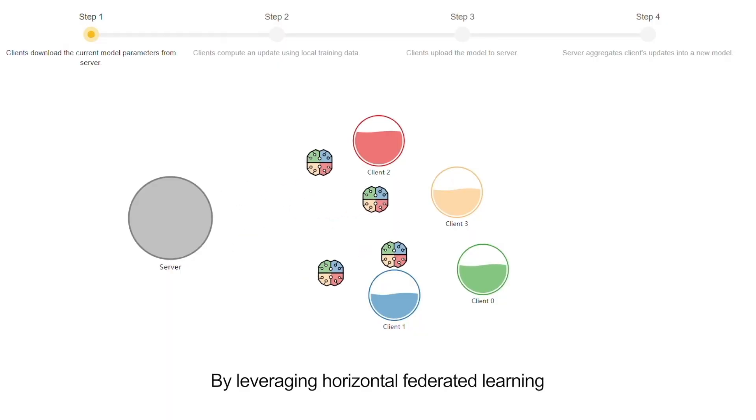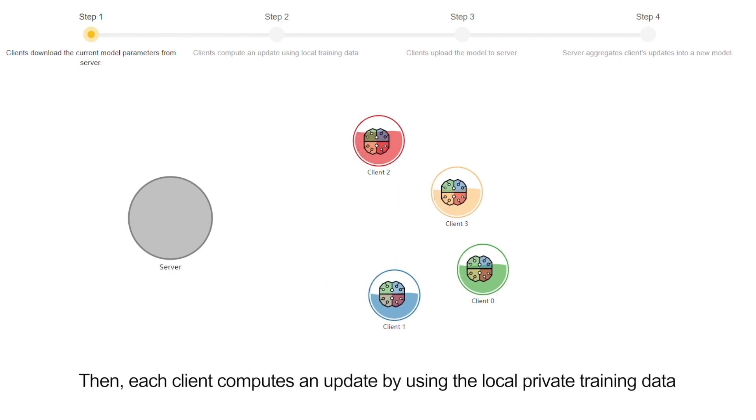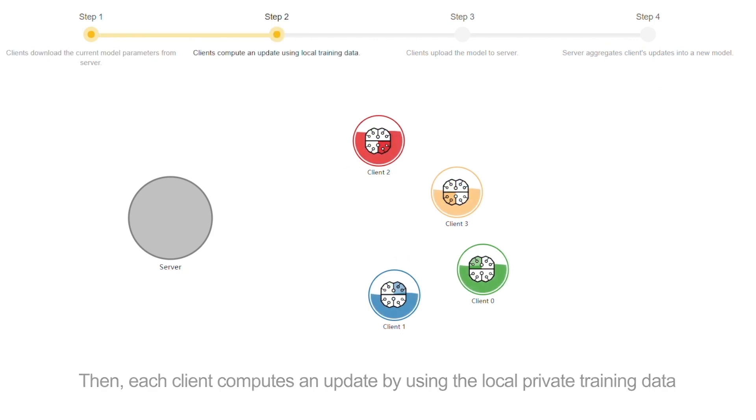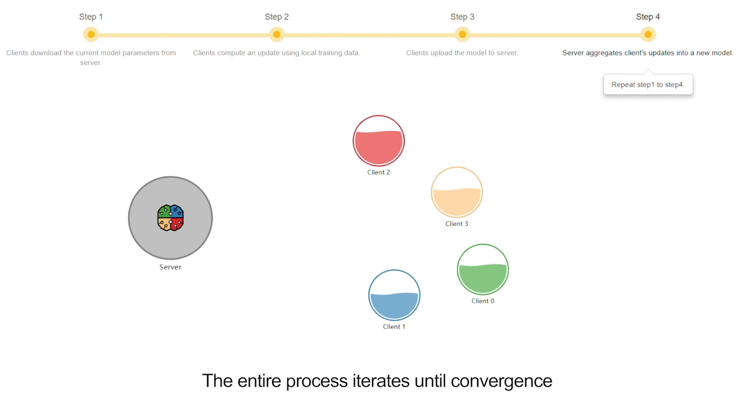By leveraging horizontal Federated Learning, clients first download the currently initialized model parameters from the server. Then, each client computes and updates using the local private training data. After training, clients upload new gradients to the server. The server then aggregates all client updates into a new and improved model. The entire process iterates until convergence.